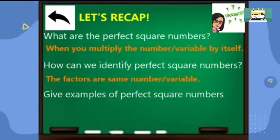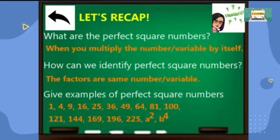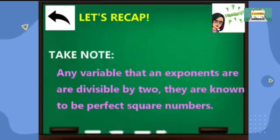The factors are the same number or variable, then it is a perfect square. The perfect square numbers include 1, 4, 9, 16, 25, 36, 49, 64, 81, 100, 121, 144, 169, 196, 225, a squared, b to the fourth. Take note: any variable whose exponent is divisible by 2 is known to be a perfect square.